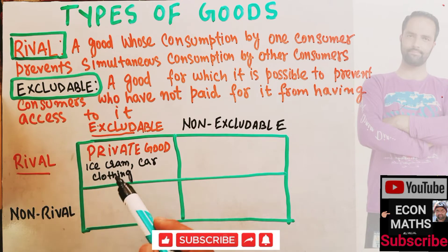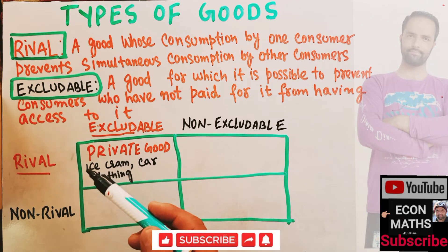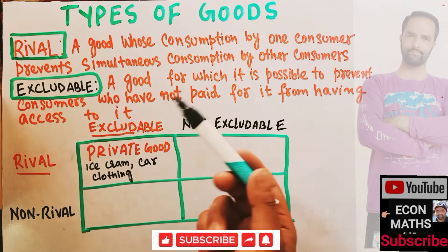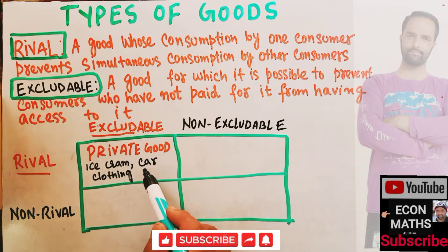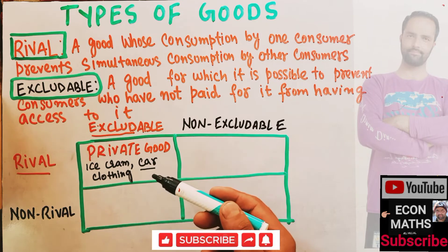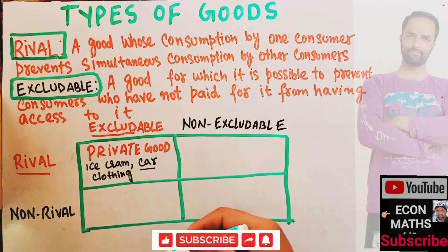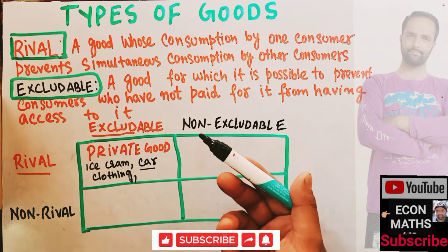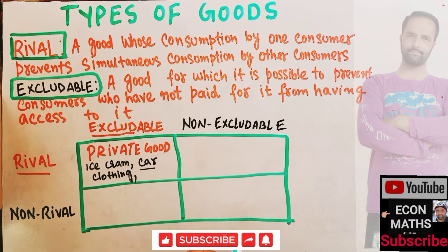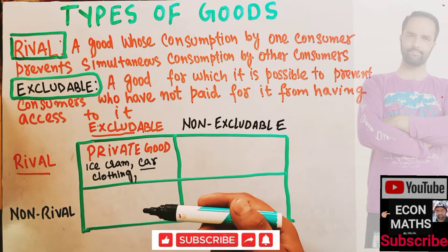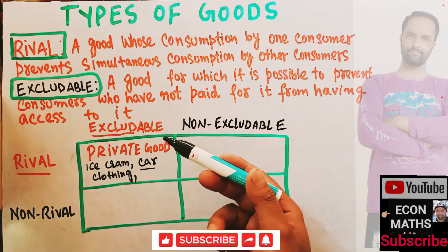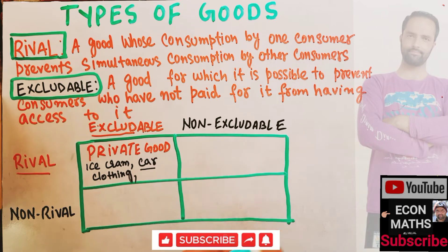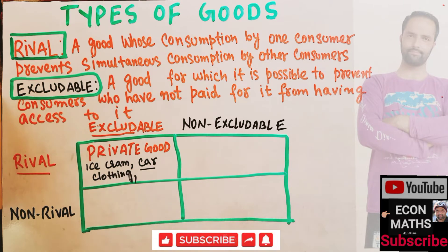Ice cream is rival in nature because the ice cream consumed by one person will not be available for another person simultaneously. Similarly, a car bought by one person will not be available for consumption by other consumers. Private goods are also excludable in the sense that only the person who pays for them can have access, and they must be purchased before consumption.